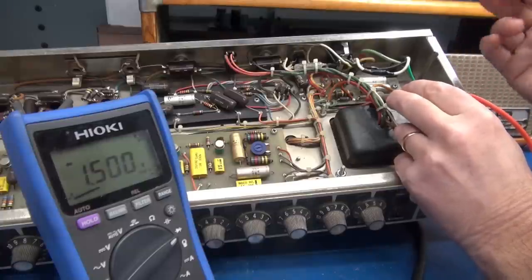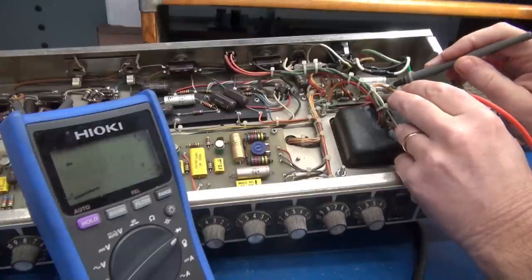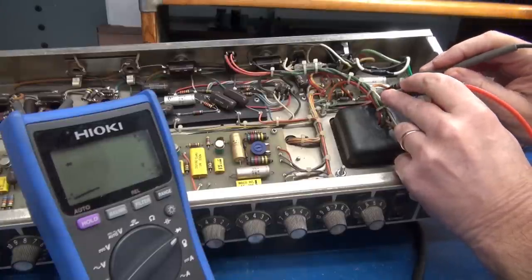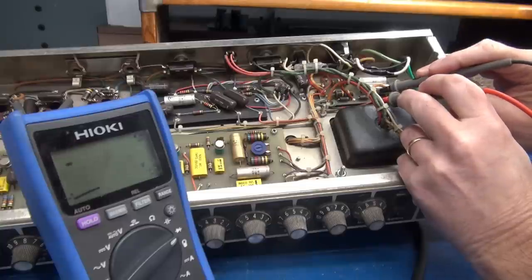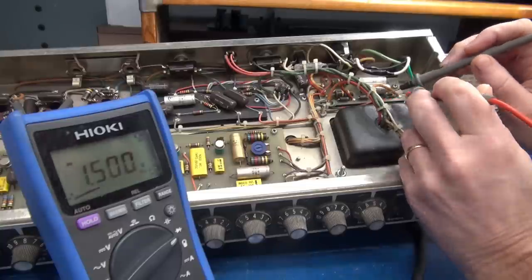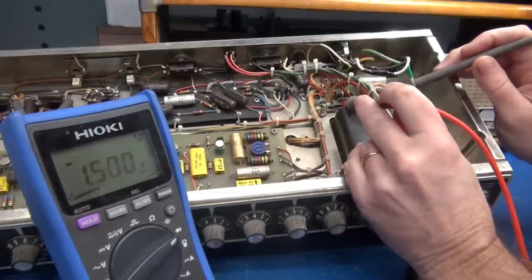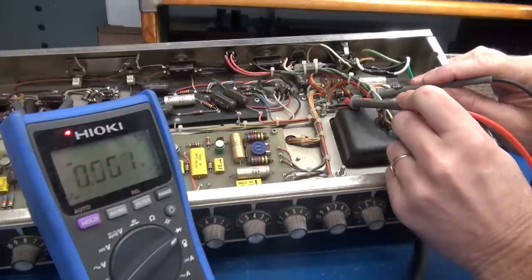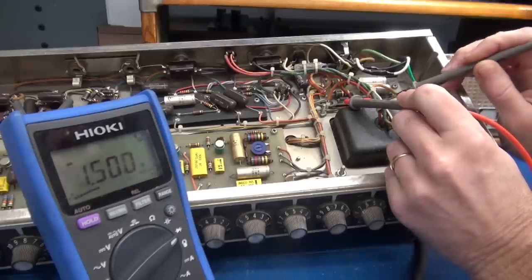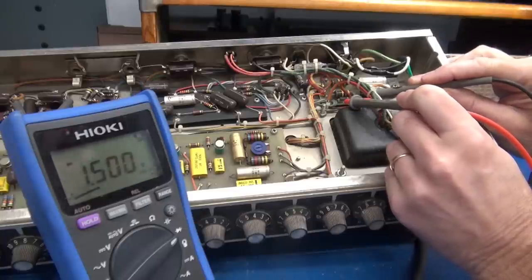So we'll test the first diode. Your black lead is going to go to the band of the diode. Look at there, 0.5 volts. So that diode is not shorted. Let's move over to the other one. Sorry if my hands are getting in the way. Same check. Look at there. This diode is shorted.